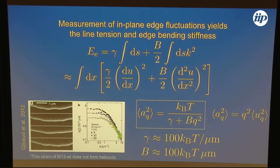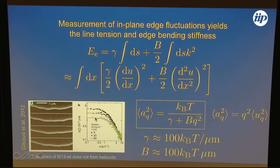Here are some measurements of these quantities. We can use the equipartition theorem and look at the fluctuations of the edges. From line tension, we expect a k_B T / Q² spectrum. The experimentalists have factored out Q² so that for low Q, this quantity saturates, looking like k_B T over the line tension. As you increase the chirality — decrease the temperature — you see the fluctuations go up, which is the effect of lowering the line tension by increasing the chirality. At high Q, it falls off with a slope of two on this log-log plot.